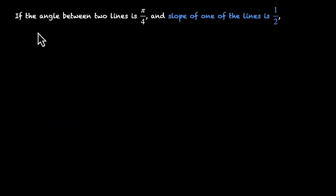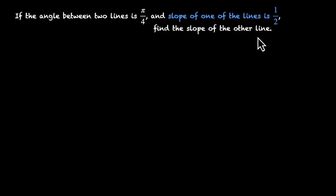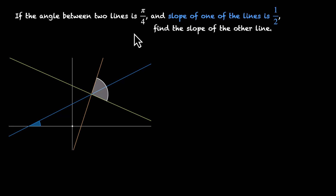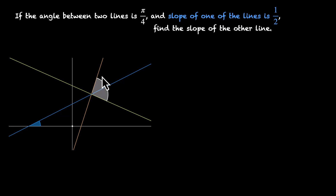Now let's solve a problem. If the angle between two lines is pi by 4, and the slope of one of the lines is half, find the slope of the other line. Let's plot things: we have our x-axis, y-axis, and a blue line with slope half. The angle between the lines is pi by 4, which is 45 degrees. The second line could go in one direction making 45 degrees, or in another direction also making 45 degrees. Both the yellow and green lines make 45 degrees with the blue line, so we'll get not one but two such slopes.